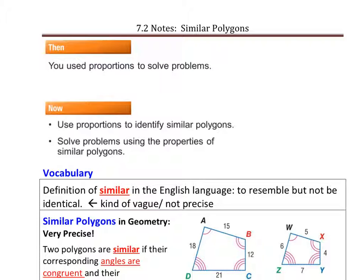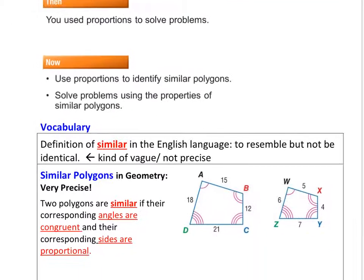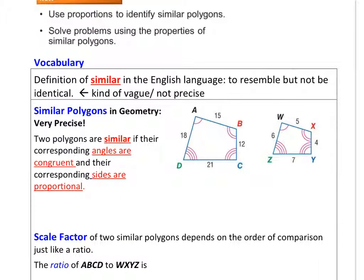First we're going to learn about what similar polygons are and then once told that polygons are similar we're going to use that to find missing angles or missing sides. So first definition is similar. What is a similar polygon?